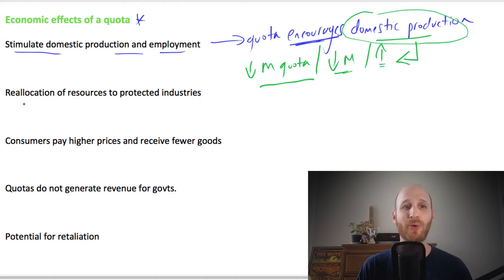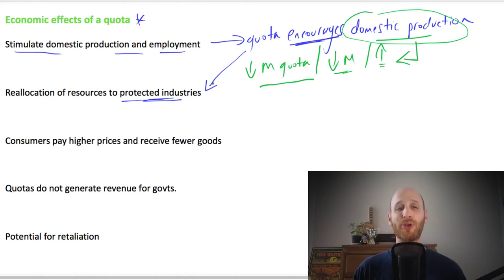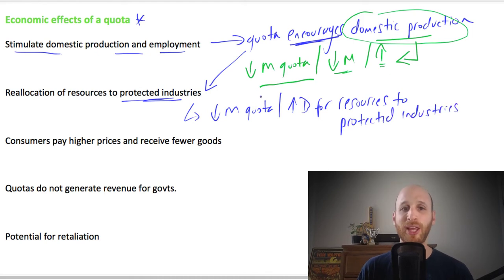The next point is that a quota will reallocate resources to protected industries. And that will be in this situation. If domestic firms are being encouraged to produce more, then they're going to attract more resources, right? If we reduce the import quota, less imports, that's going to increase demand for the resources to go to those protected industries that can now increase market share.